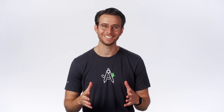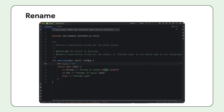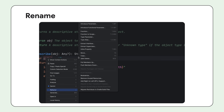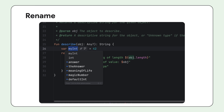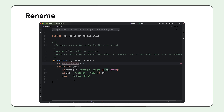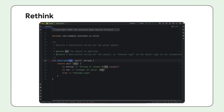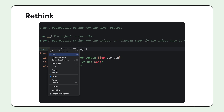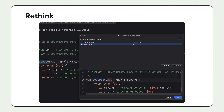We all know how difficult naming can be. These next two Gemini features make it easier. With Rename, Gemini will use surrounding context to suggest identifier names for variables, methods, classes, and more. And you'll know that they're generated with Gemini because they'll have the Gemini logo. Rethink helps you with larger refactoring tasks — right-click on a variable or method and Gemini will suggest contextually relevant variable names.